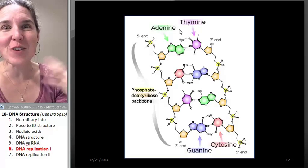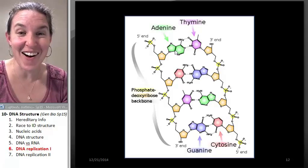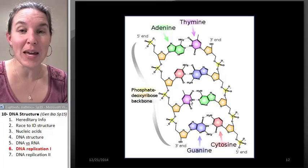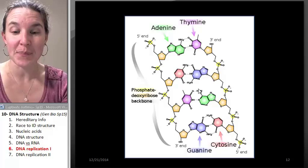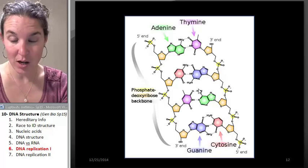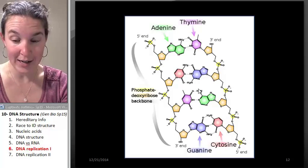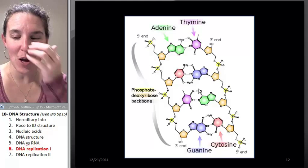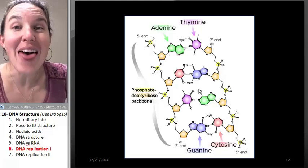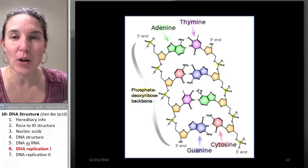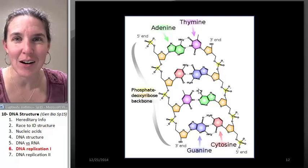If every letter, this is awesome. If every nitrogen base was a letter in a book on a page of writing, your genome would make up 2,000 books, and each book would be 1,000 pages long.